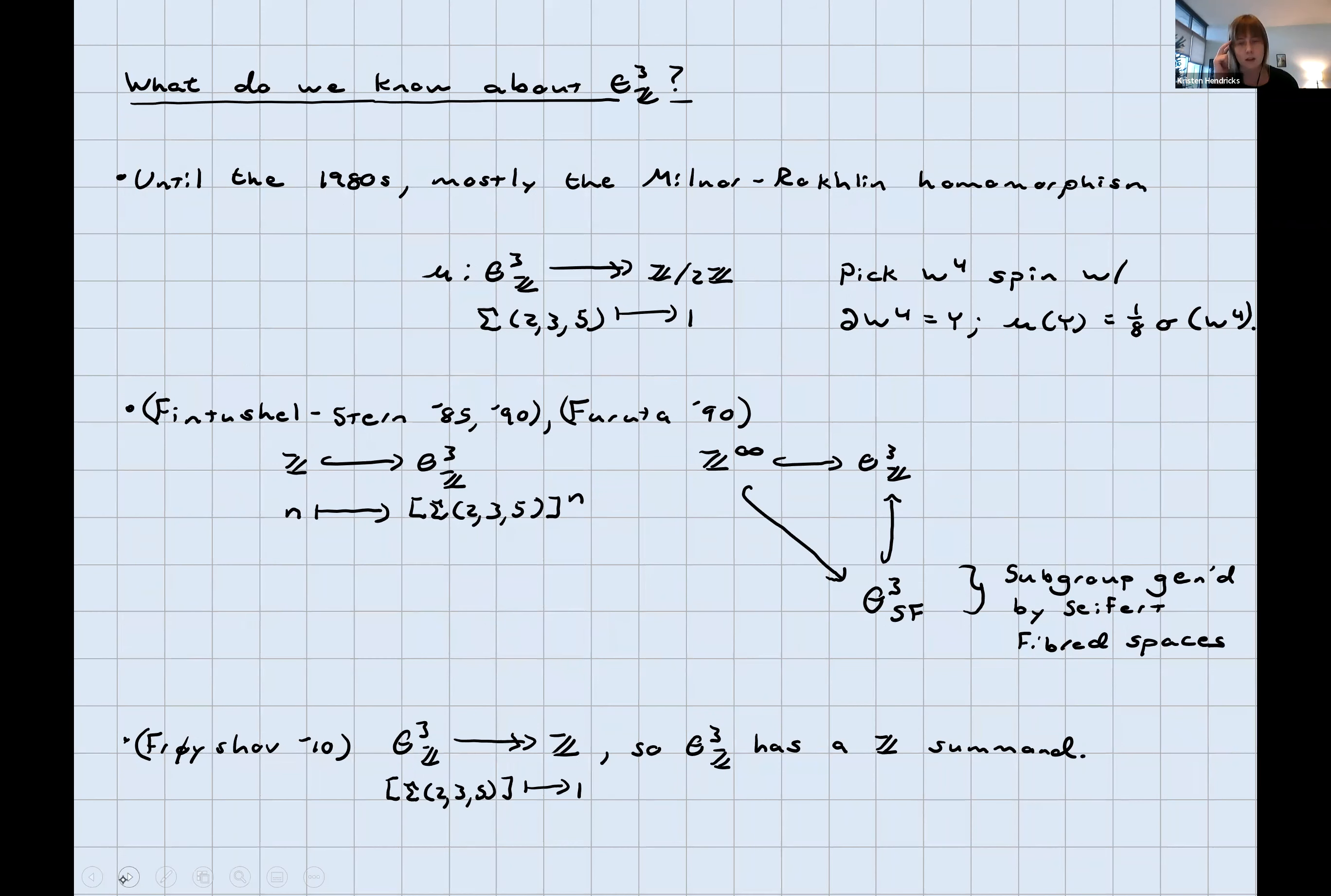What is known about this group? It's a group of manifolds, but it's nevertheless a group. You can ask what subgroups does it have, what summands does it have, does it have torsion, et cetera. Until the eighties, much of what was known was the existence of the Milnor-Rochlin homomorphism. It's got a surjection onto Z mod 2Z. An example of a thing in the pre-image of the non-trivial element is the Poincaré homology sphere. I can always pick a spin four manifold whose boundary is Y, look at the signature, divide by eight. That modulo two is a homology cobordism invariant. It was popular to conjecture that this was going to turn out to be an isomorphism. However, it's not.